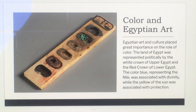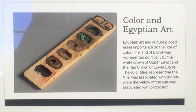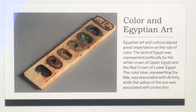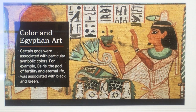Egyptian art and culture placed great importance on color. The land of Egypt was represented politically by the white crown of Upper Egypt and the red crown of Lower Egypt. The color blue, representing the Nile, was associated with divinity, while yellow, the color of the sun, was associated with protection. Certain gods were associated with particular symbolic colors — for example, Osiris, the god of fertility and eternal life, was associated with black and green.